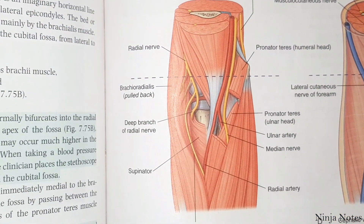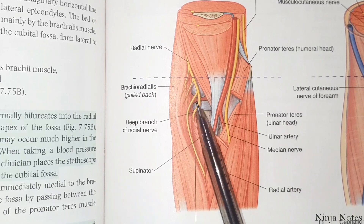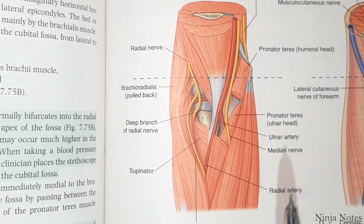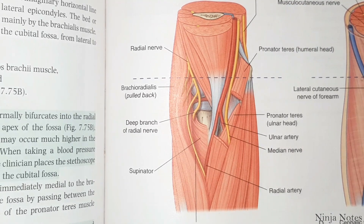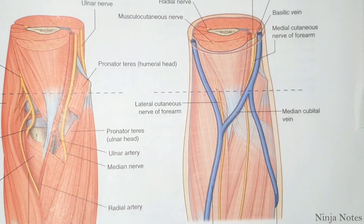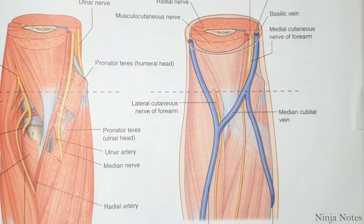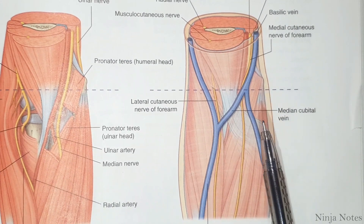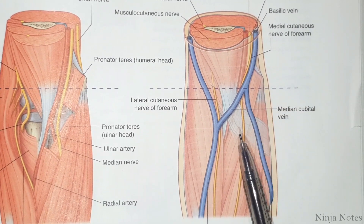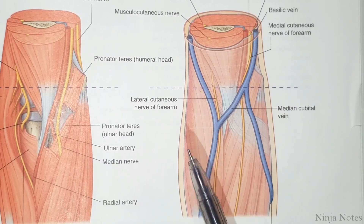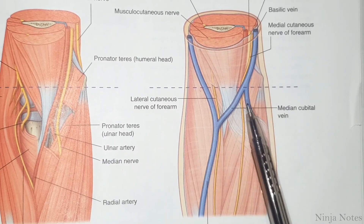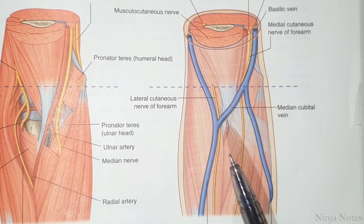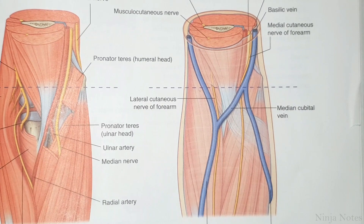In this picture we can clearly see the deep branch of the radial nerve, which is also one of the contents of this cubital fossa. Within the roof of this cubital fossa, the median cubital vein is running through it. The clinical significance of this median cubital vein is that it can be accessed for venipuncture.